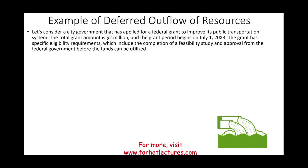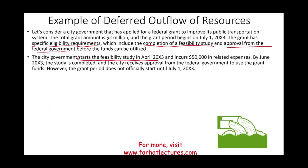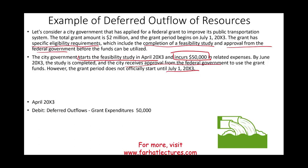Consider a city government that has applied for a federal grant to improve its public transportation system. The total grant is $2 million. The grant period begins July 20X3. The grant has specific eligibility requirements including completion of a feasibility study and federal government approval before funds can be utilized. The city started a feasibility study in April 20X3 and spent $50,000. By June the study was completed and federal approval received, however they cannot start until July. In April, we debit deferred outflow of resources — grant expenditure $50,000 — and credit cash $50,000.